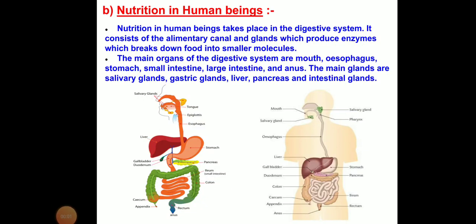Now we will see nutrition in human beings. Nutrition in human beings takes place in the digestive system. It consists of the alimentary canal and glands which produce enzymes that break down food into smaller molecules. The main organs of the digestive system are mouth, oesophagus, stomach, small intestine, large intestine, and anus.